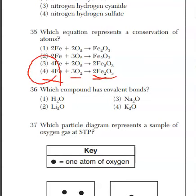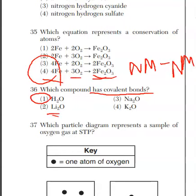Going on to 36, which compound has covalent bonds? Your covalent bonds are going to be your non-metal to non-metal bonds. The only choice it could be here is choice one. Choice two, you have lithium and oxygen. You have metal, non-metal, ionic. Choice three, sodium and oxygen, metal, non-metal, ionic. And choice four, potassium and oxygen, metal, non-metal, ionic. Choice one is the answer.